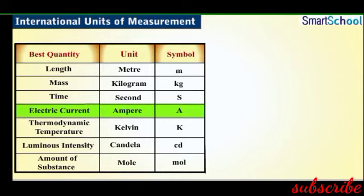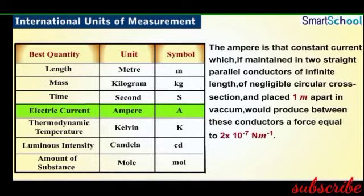Electric current is measured in ampere, denoted by the capital letter A. An ampere is that constant current which, if maintained in two straight parallel conductors of infinite length of negligible circular cross section and placed one meter apart in a vacuum, would produce between these conductors a force equal to 2 × 10⁻⁷ Newton per meter length of the conductor.